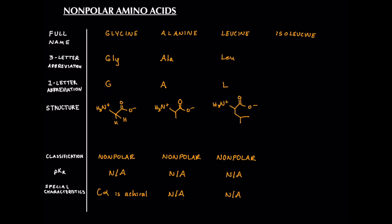Now isoleucine — its three-letter abbreviation is ILE, and note that the middle letter is an L, not an I. The one-letter abbreviation is I. Drawing the structure: starting with the backbone and then the R group, we have one carbon, two carbons, three carbons, and instead of making a V, we attach the fourth carbon to that first carbon off the branch. Same number of carbons — four — but different connectivity. Its classification is nonpolar, just a hydrocarbon. Its PKR is non-existent because there is no acidic hydrogen. Special characteristics are not within the scope of the MCAT.